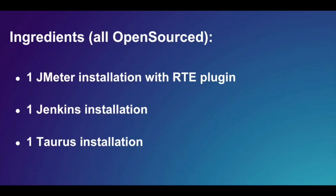If we have an issue with a specific build, I can click here and it will take me directly to the build that had all the issues — build number 18. I can go back and see that build 18 just failed, look at the console output, and get everything I need. So to conclude: we had one JMeter script with an RTE plugin, one Jenkins, and one Taurus. We created a functional scenario to test one of the CICS screens, validated reports locally, then fired it up on BlazeMeter.